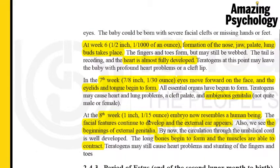By the eighth week the embryo reaches about one inch in size and one-fifteenth of an ounce in weight, and now slowly starts resembling a human being. Facial features start developing, external ears are developing, and the beginning of the genitalia can be seen. The bones start forming and muscles start contracting — this is the end of the embryonic stage at week eight.